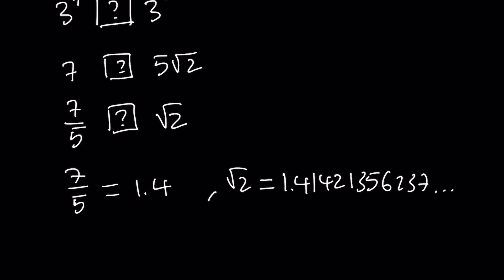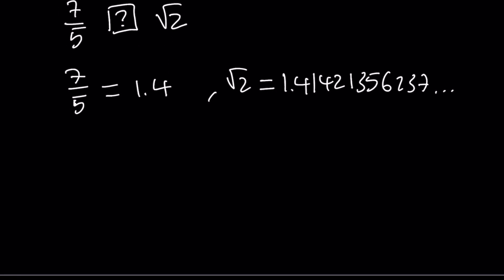square root of 2 is greater than 7 fifths. Obviously, this number is greater than 1.4. Therefore, we can safely say that square root of 2 is greater than 7 fifths, which implies, when you multiply both sides by 5, you get 5 root 2 is greater than 7.